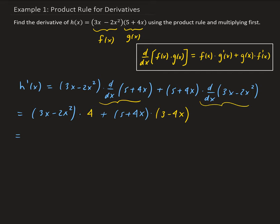From here we can simplify and combine like terms. Distributing the 4, we get 12x minus 8x squared. Then expanding 5 plus 4x times 3 minus 4x: 5 times 3 is 15, 5 times negative 4x gives minus 20x, 4x times 3 gives plus 12x, and 4x times negative 4x gives minus 16x squared.